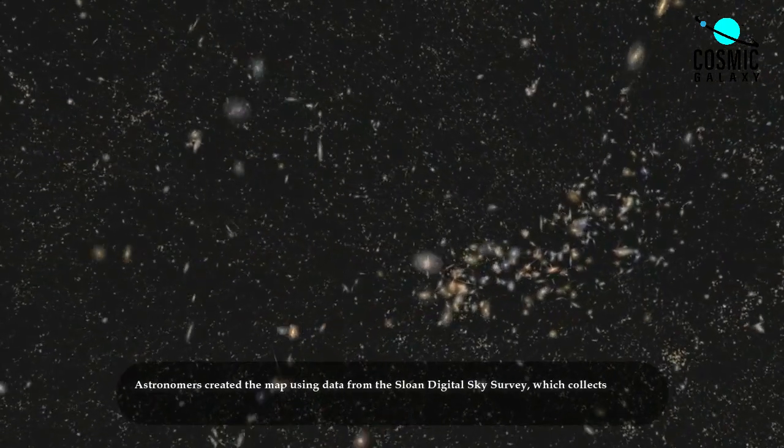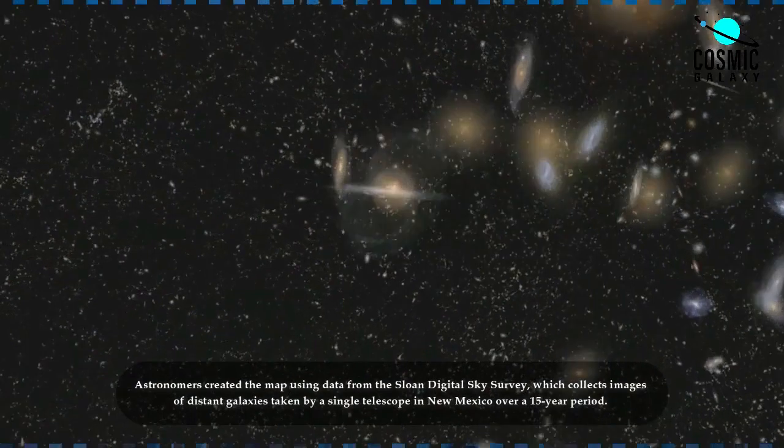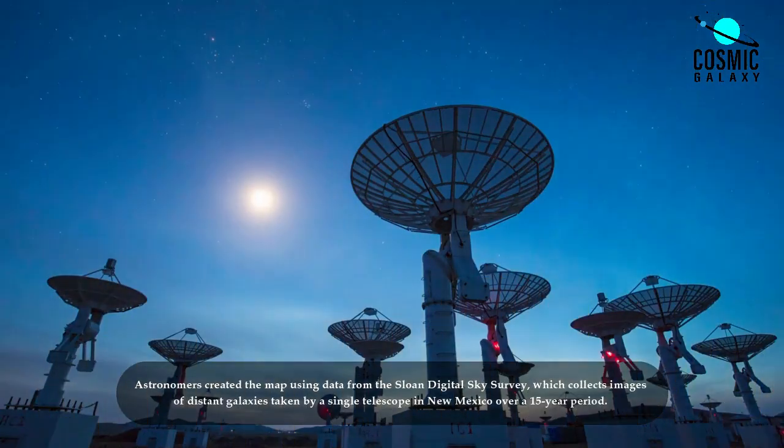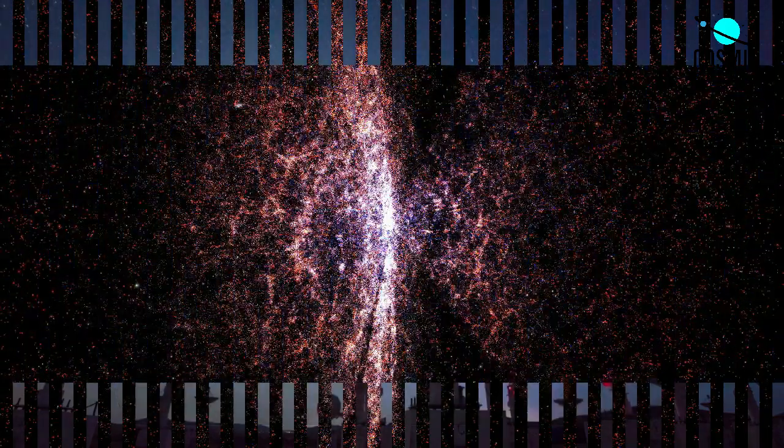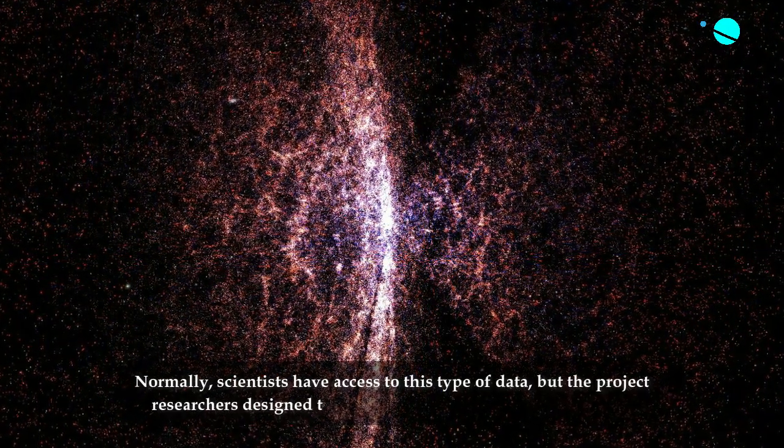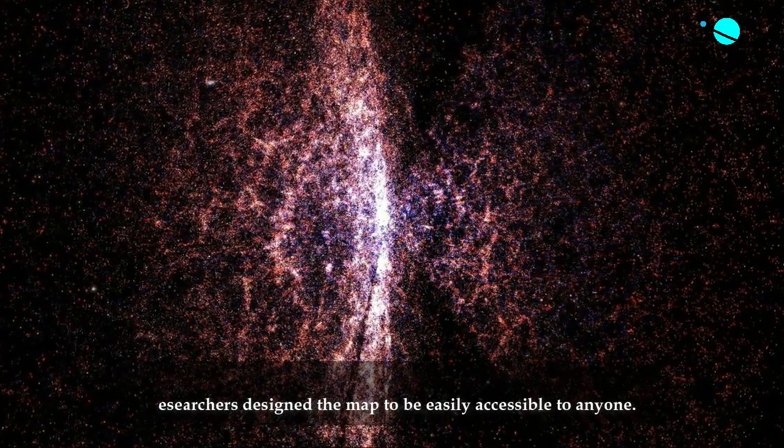Astronomers created the map using data from the Sloan Digital Sky Survey, which collects images of distant galaxies taken by a single telescope in New Mexico over a 15-year period. Normally, scientists have access to this type of data, but the project researchers designed the map to be easily accessible to anyone.